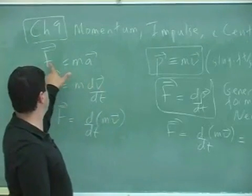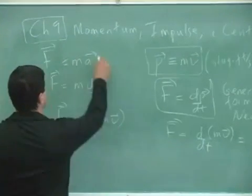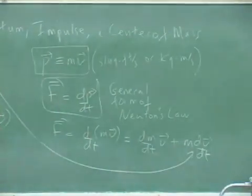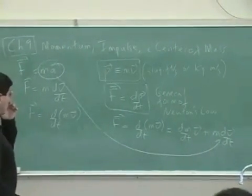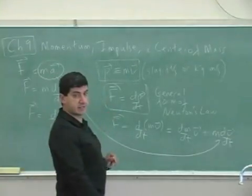So it's more general than this one. This is F equals ma, and this portion of it is only the second portion of Newton's law, mdv/dt. So you see, it's a little bit more general. And then from this, we define a couple other things.